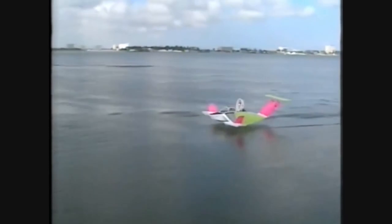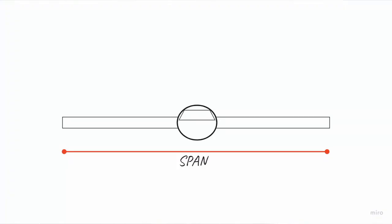This episode, we'll discover span-dominated ground effect, where drag decreases even further when a wing comes closer than one span away from the surface. The span is the width of a craft from wing tip to wing tip.